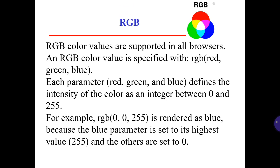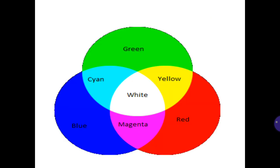RGB. RGB color values are supported in all browsers. An RGB color value is specified with RGB — red, green, and blue. Each parameter — red, green, and blue — defines the intensity of the color as an integer between 0 and 255. For example, RGB(0, 0, 255) is rendered as blue because the blue parameter is set to its highest value and the others are set to 0. So the main colors are red, green, and blue.